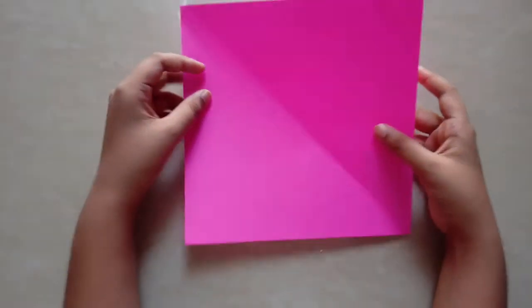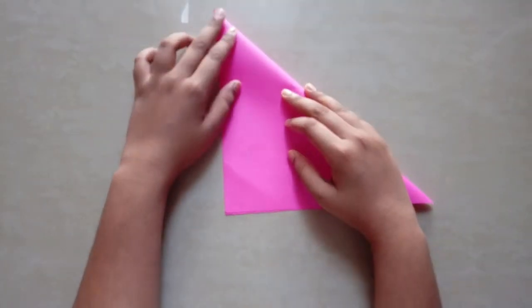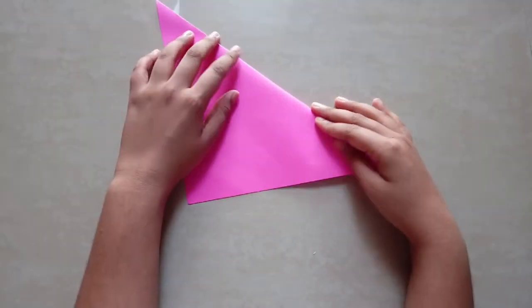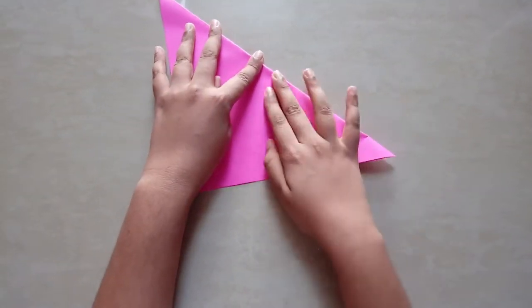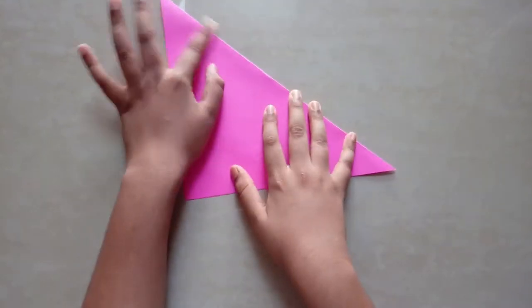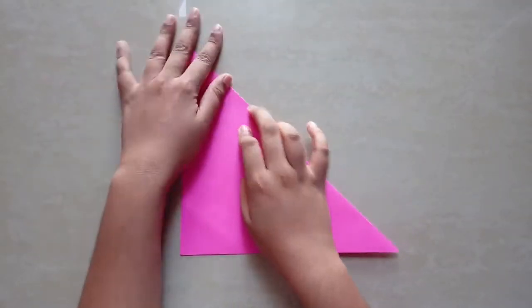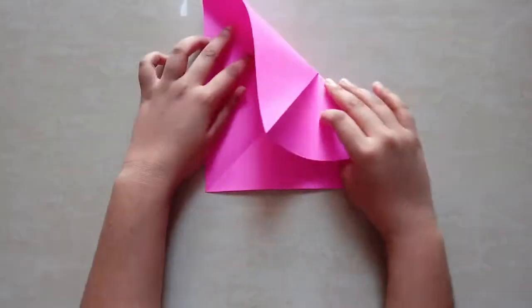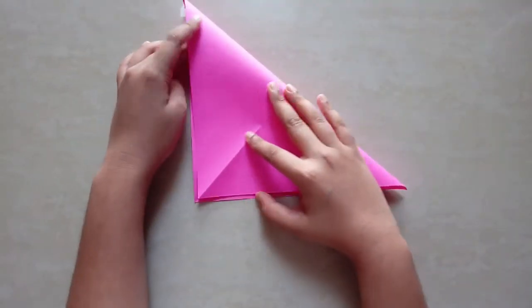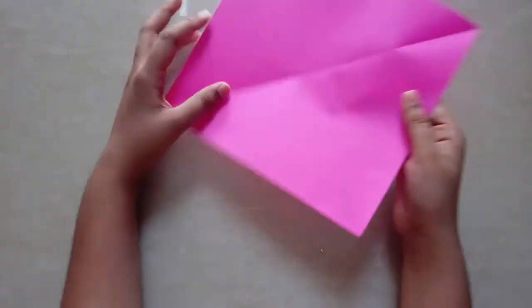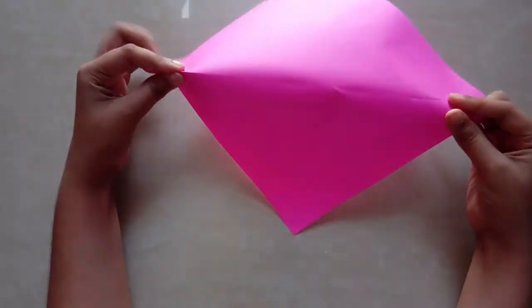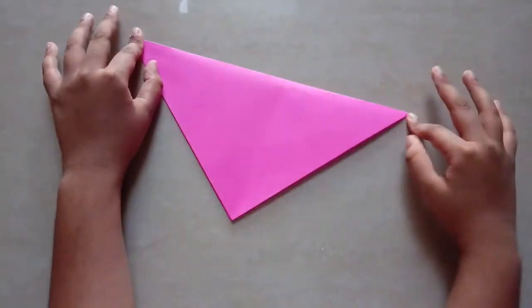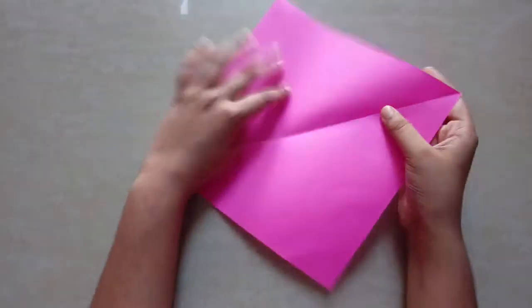Take the paper, fold it into a triangle, crease it. Now open it and fold the triangle on the other side. Repeat on the other diagonal.